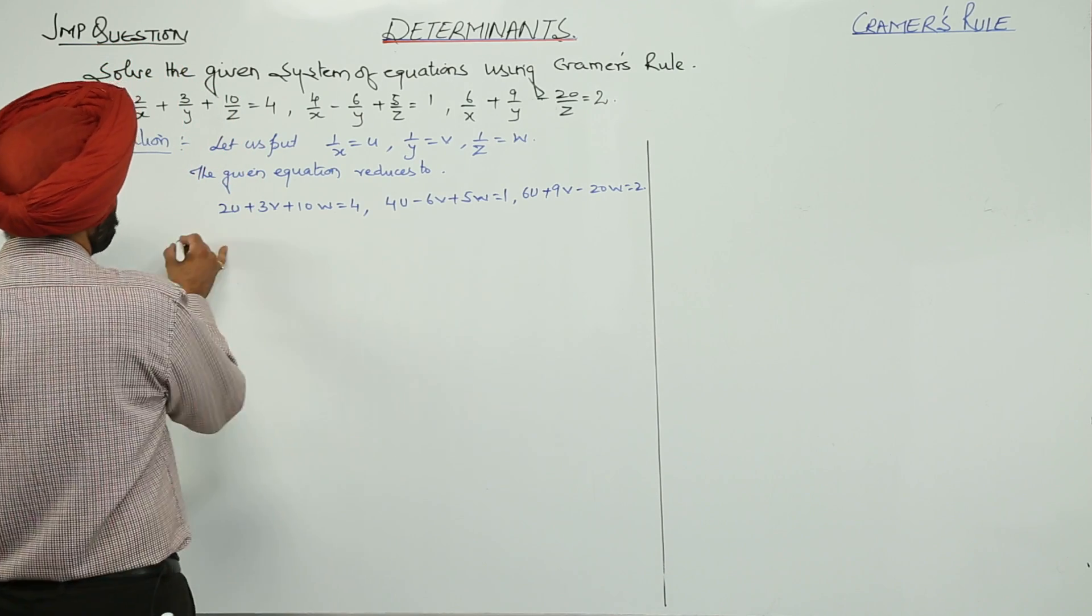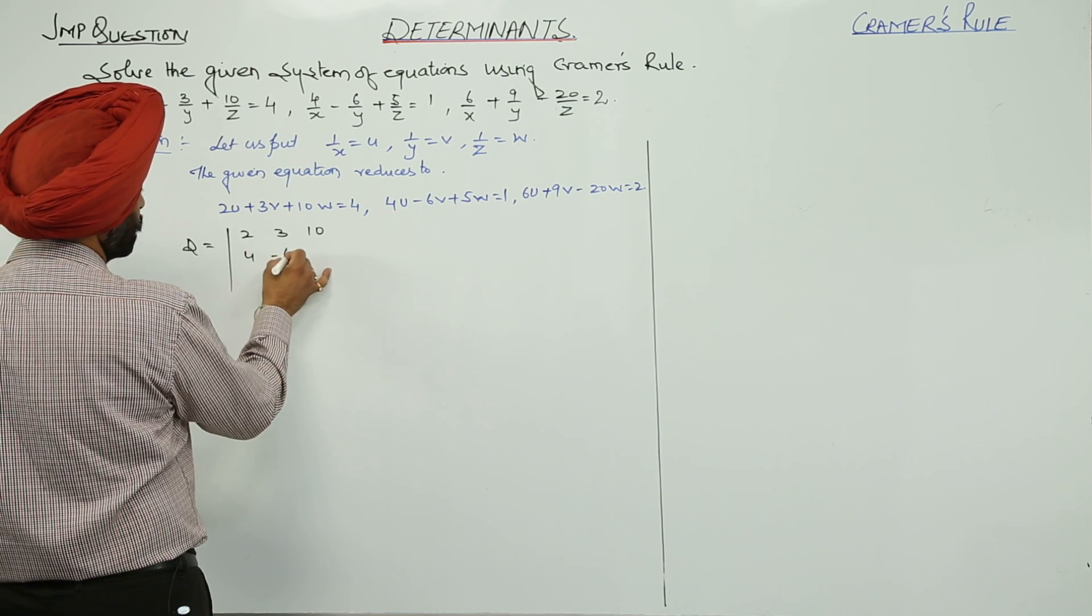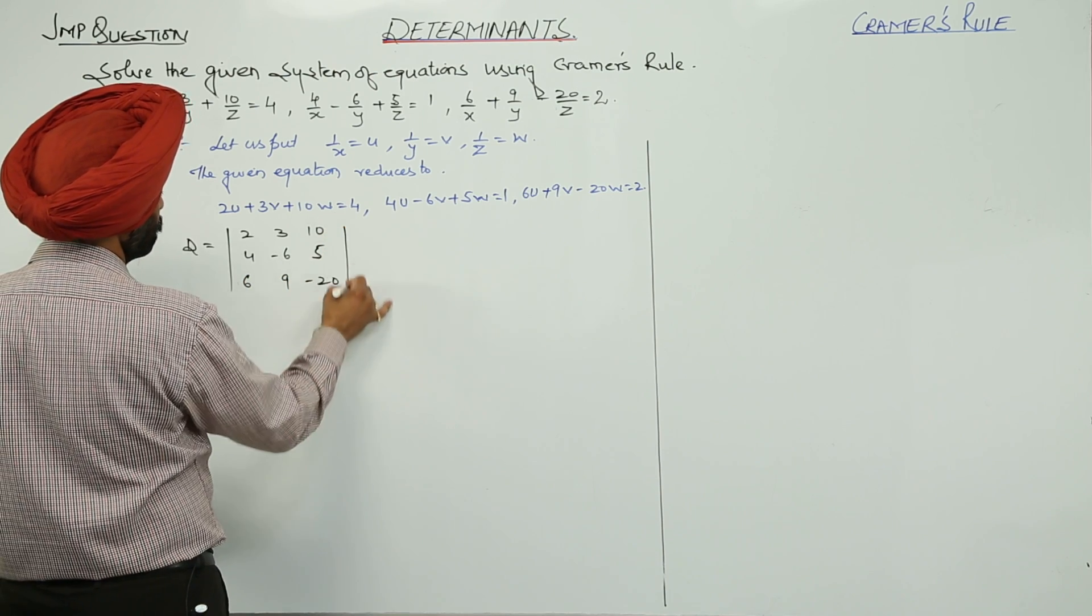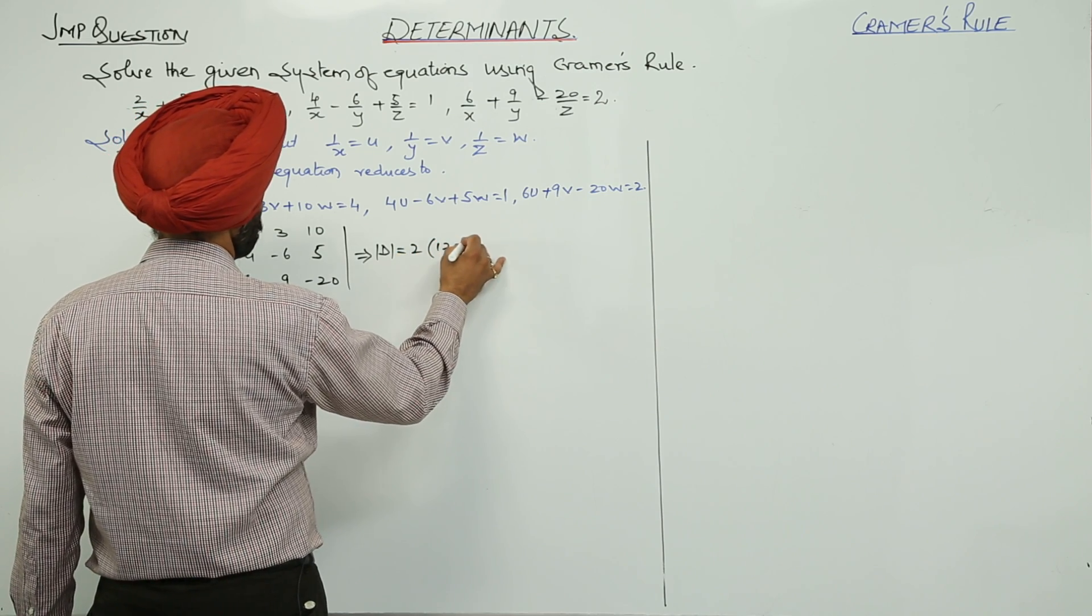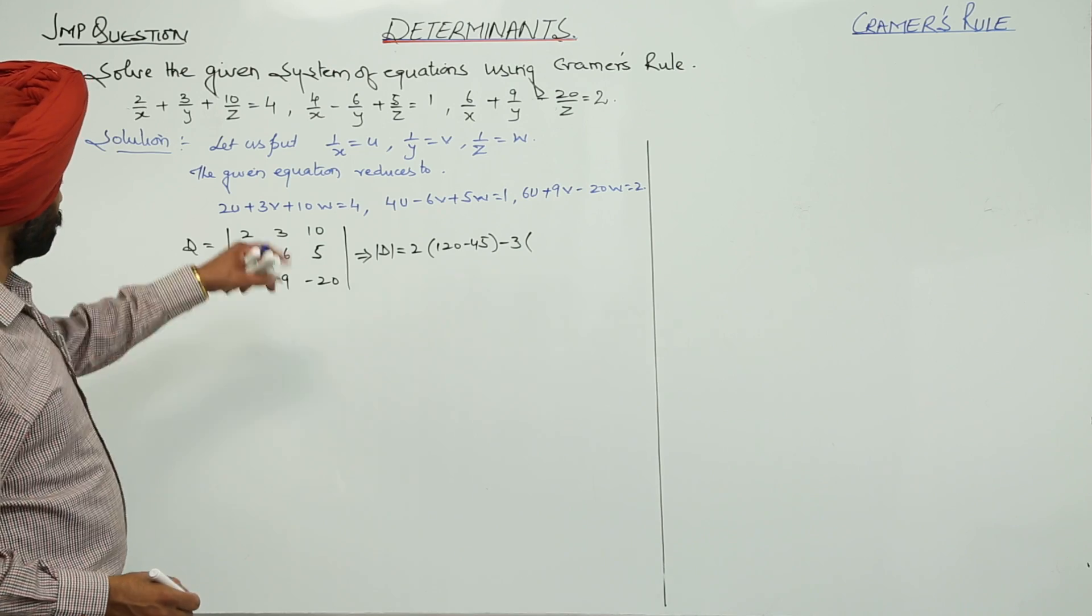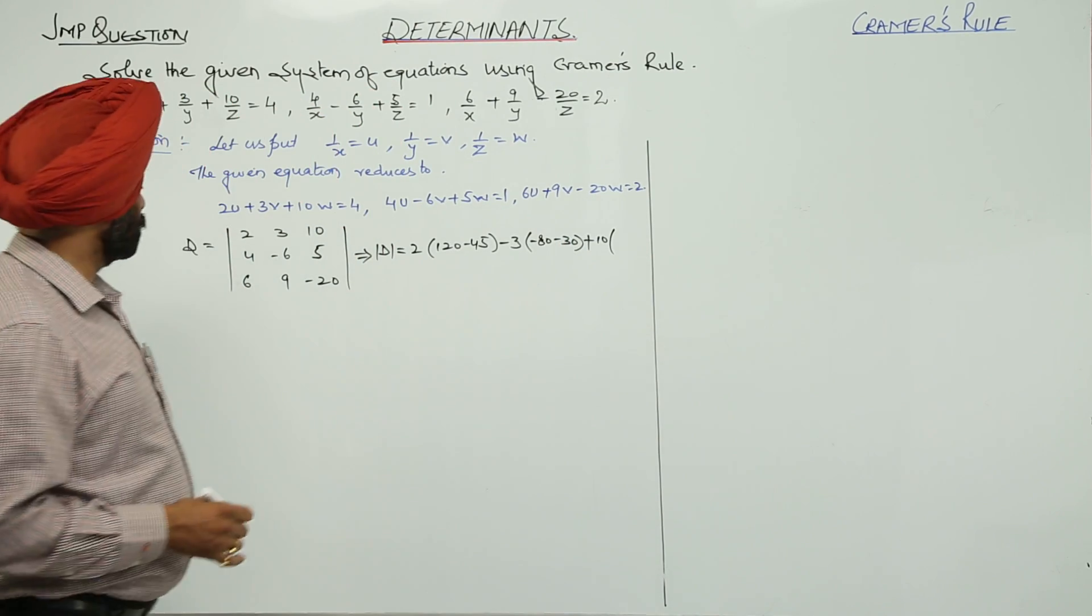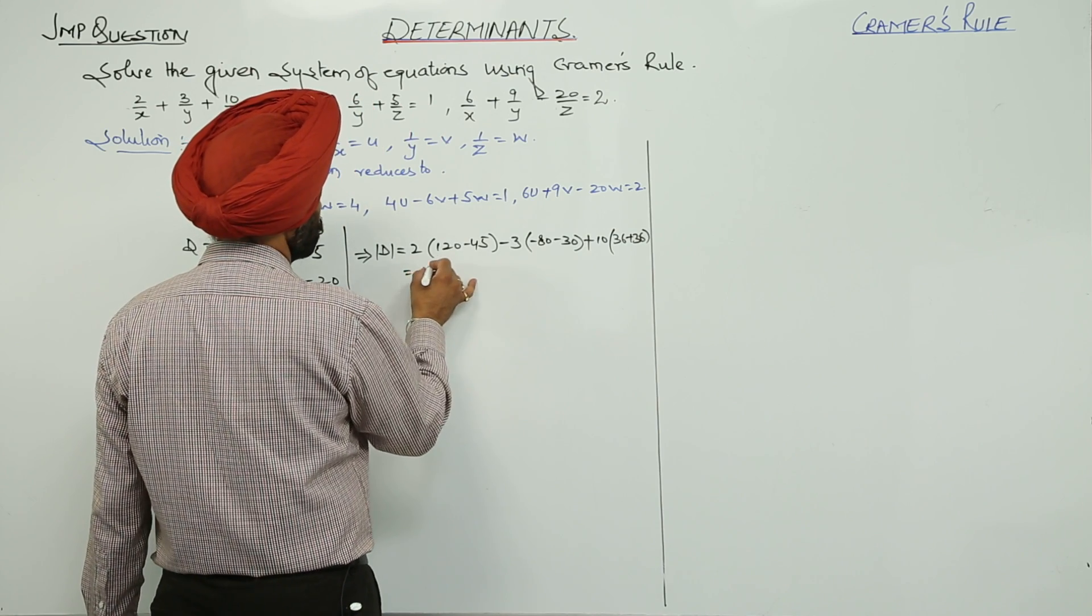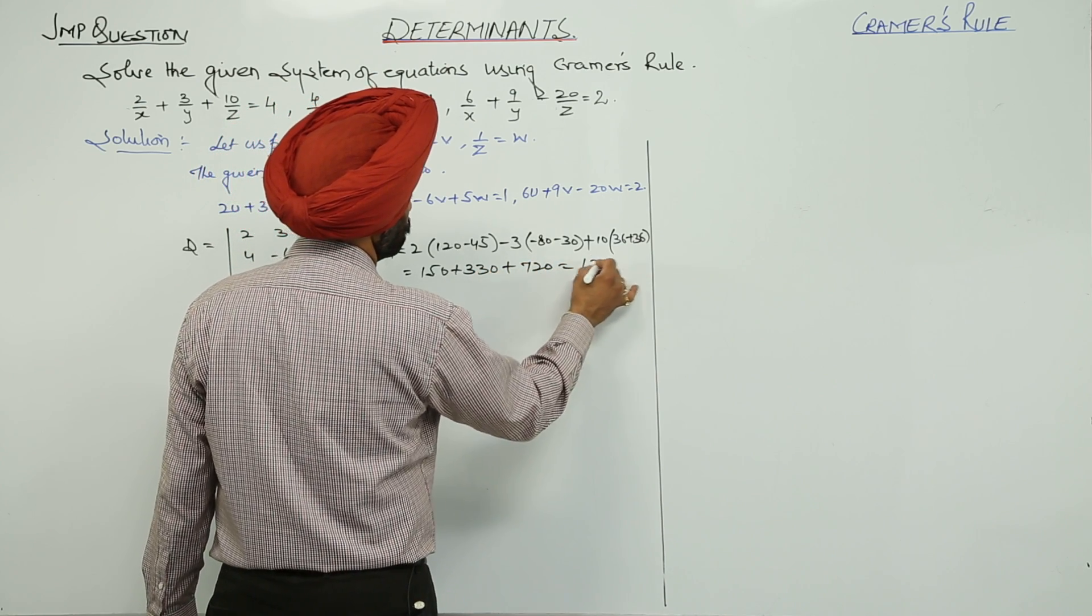Now, using Cramer's rule, the first step is to evaluate d. D is 2, 3, 10, 4 negative of 6, 5, then 6, 9 negative of 20. D is equal to 120 minus 45, negative of 3. Now, negative of 80, negative of 30 plus 10 with 36 plus 36. This becomes 150 plus 330 plus 720 is equal to 1200.